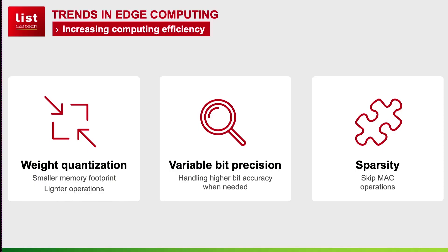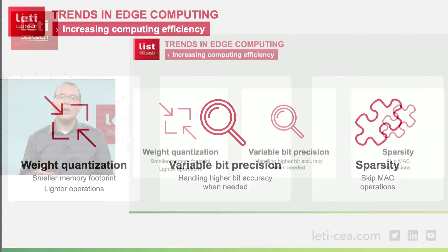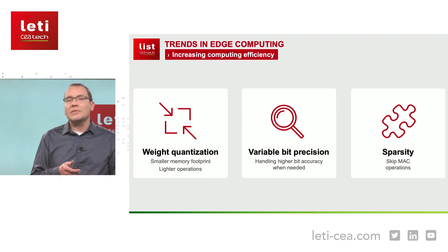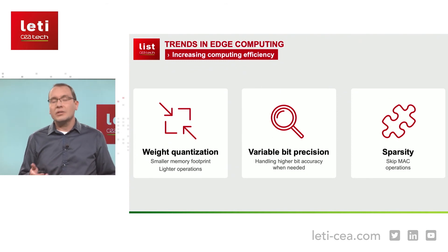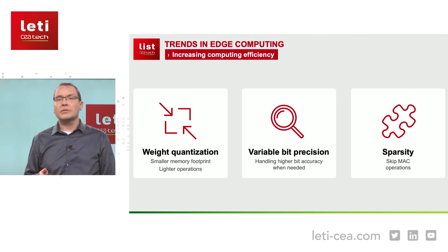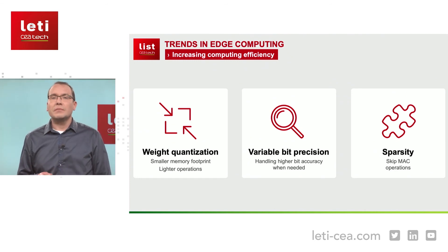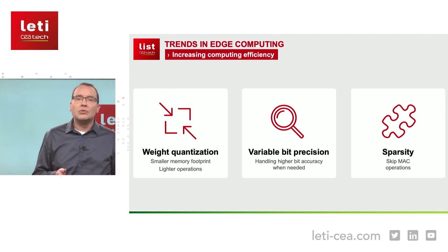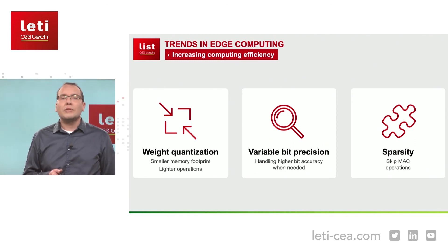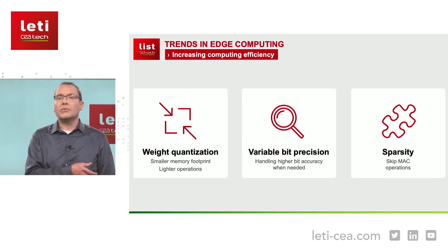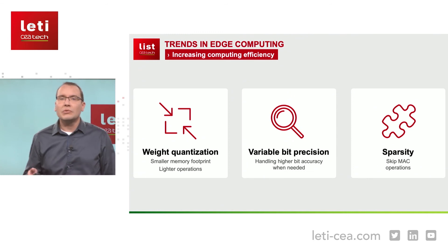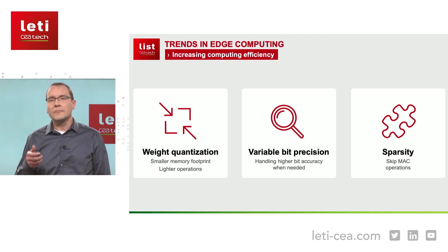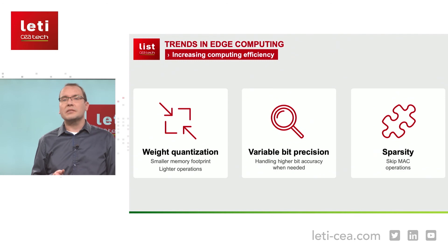The trends in edge computing are the following. First, since you want to avoid large data movements, you can start by quantizing data for having more lightweight data. You can consider 8-bit or 4-bit integer operations instead of 32-bit floating point, suffering almost no classification loss. In the same manner, you can also exploit variable bit precision with lower precision in the convolutional filters and higher resolution in the output classifier. And finally, you want to exploit the sparsity of weights as well as the sparsity of operations.